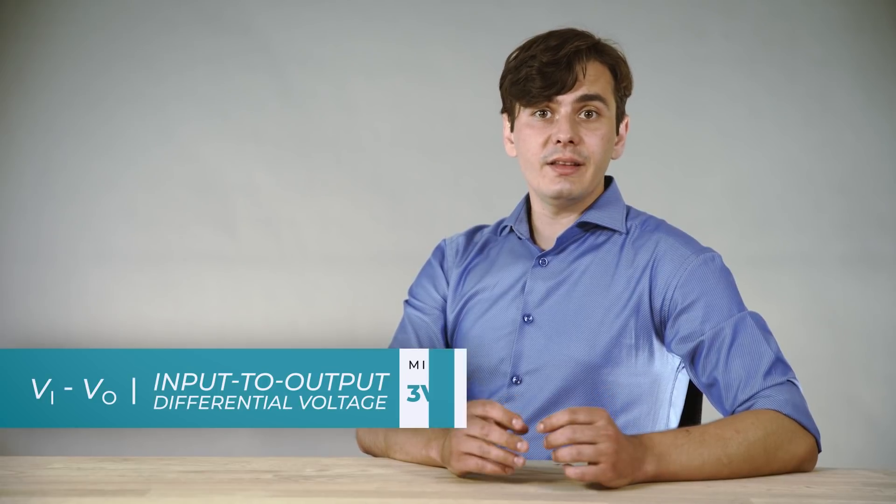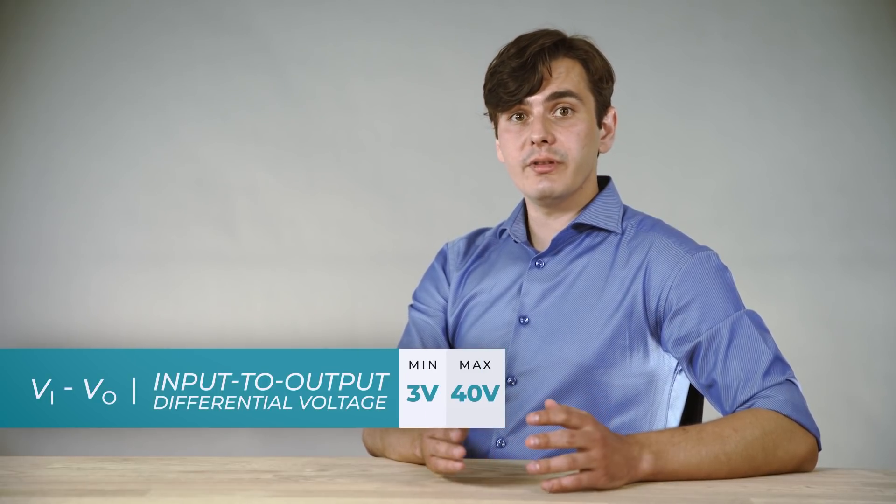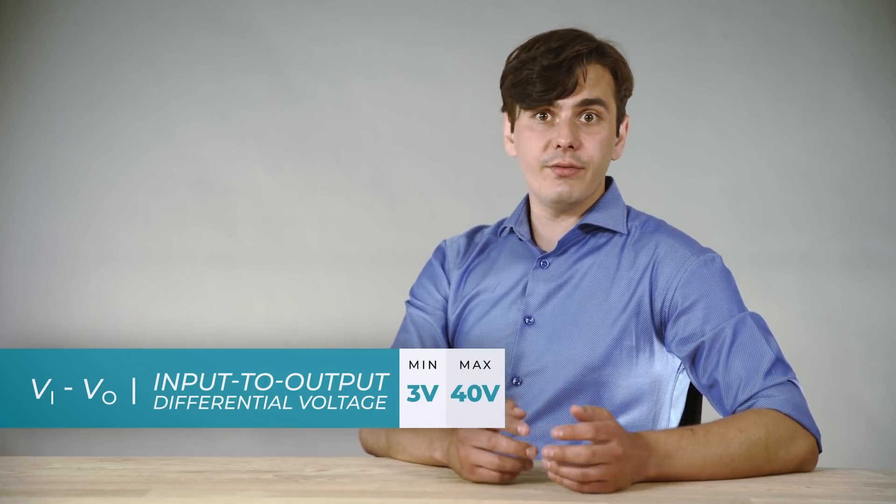There are two very important characteristics of the linear regulators. The first is the dropout voltage. In the case of LM317, it is specified as input-to-output differential voltage, and it is 3V. What it means is that you need to provide extra 3V for the regulator to operate in normal mode.